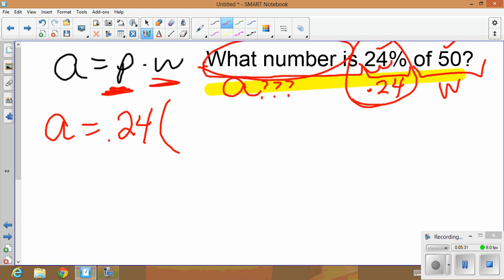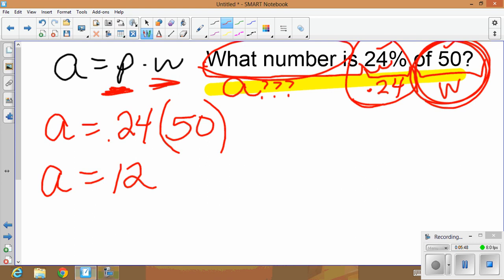And if you look over here, my percent is 0.24. 0.24 times, I need a w. So if I go in here and look, my w is 50. 50 is the whole. So if you take your calculator and you do 0.24 times 50, you get 12. So a equals 12.